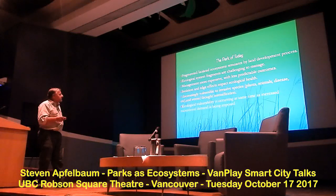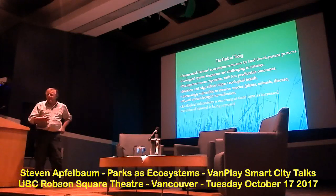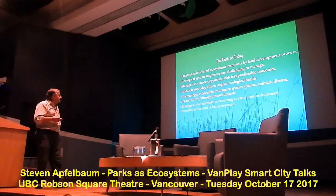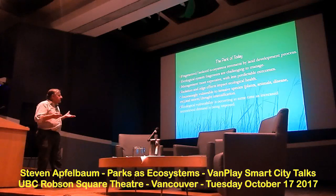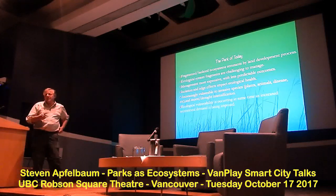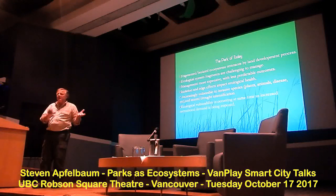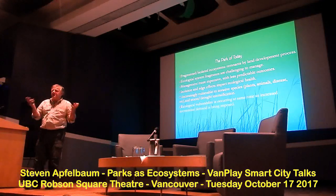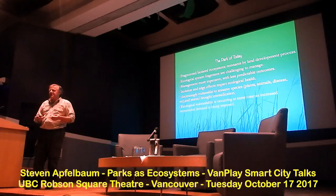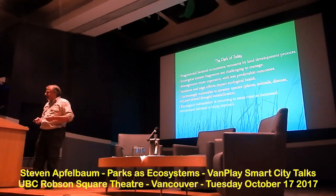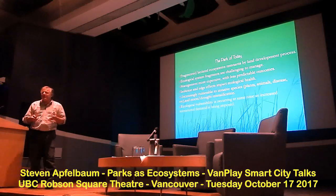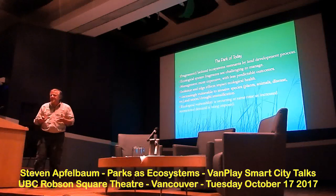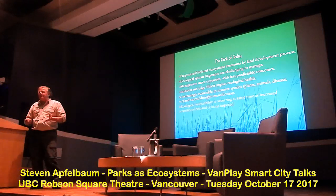The outcomes are less predictable when we fragment and change the nature of the landscape. Isolation and edge effects impact the ecological system and the opportunity to manage it. What we're learning is that there's increasing vulnerability from invasive species, hydrologic change, climate change — the whole range of stochastic events we're experiencing from rainfall intensification to drought. All of that impacts these wonderful, beloved pieces of property that we call parks.